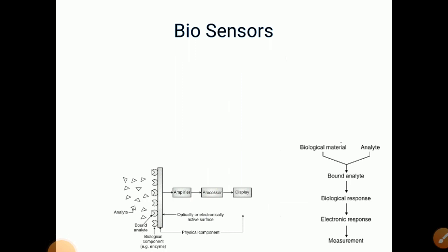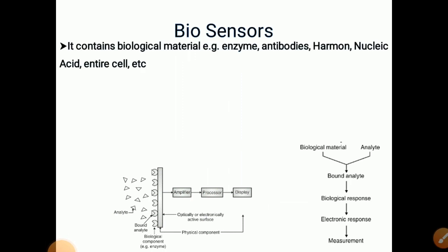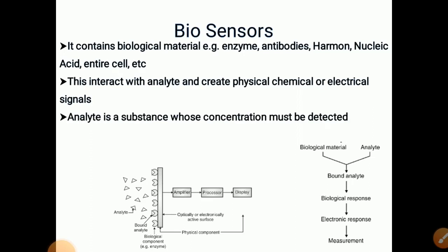Now we study biosensors. It consists of biological material, for example, enzyme, antibodies, hormone, nucleic acid, entire cell. This interacts with analyte and creates physical, chemical or electrical signal. Analyte is a substance whose concentration must be detected.